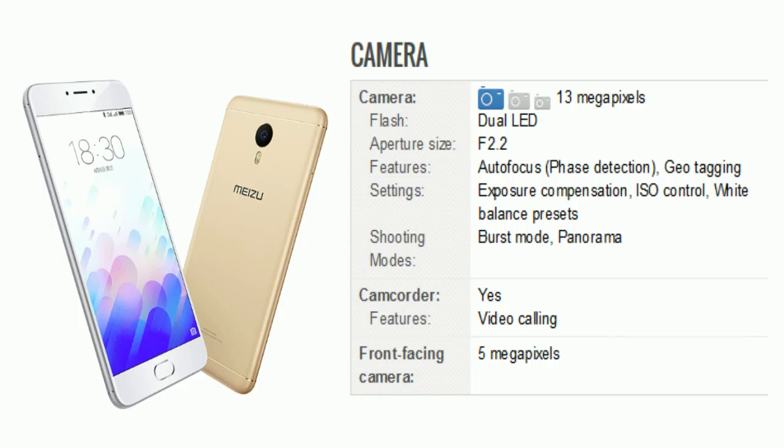Now we will take a look at its camera. There is a 13 megapixel camera with dual LED flash. Camera features include autofocus, phase detection, and geotagging. Camera settings cover exposure compensation, ISO control, and white balance presets. Shooting modes include burst mode and panorama. The front camera is 5 megapixels.